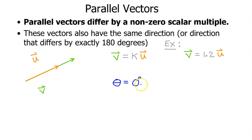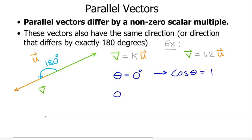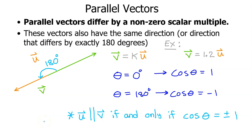So we can say theta equals 0 degrees, which implies that cosine theta is equal to 1. But two vectors will also be parallel if they have opposite directions. In that case the angle between them is 180 degrees, meaning theta equals 180, which implies that cosine theta equals negative 1, because the cosine of 180 is negative 1. So U is parallel to V if and only if the cosine of theta equals plus or minus 1.